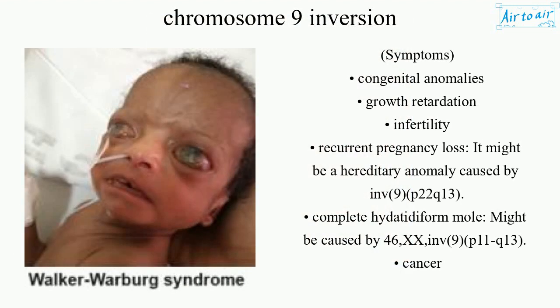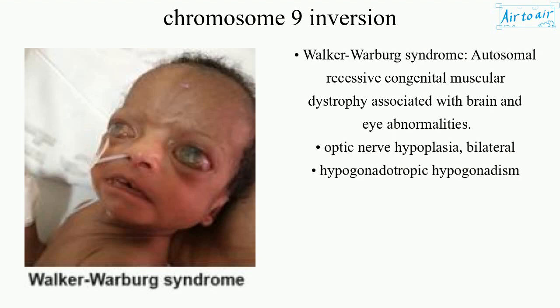Symptoms include congenital anomalies, growth retardation, infertility, and recurrent pregnancy loss. It might be a hereditary anomaly caused by INV-9 P22-Q13. Complete hydatidiform mole might be caused by 46,XX INV-9 P11-Q13. Associated conditions include cancer, Walker-Warburg syndrome, autosomal recessive congenital muscular dystrophy associated with brain and eye abnormalities, optic nerve hypoplasia, and bilateral hypogonadotropic hypogonadism.